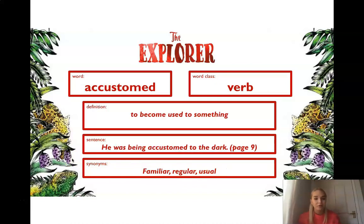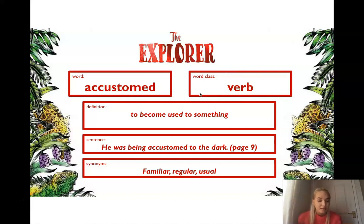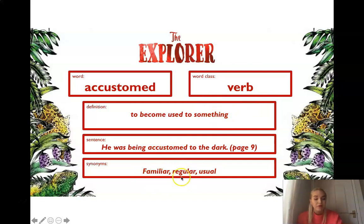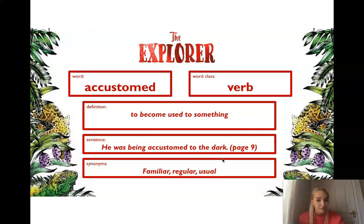Our final word that you're going to be hearing today is accustomed. Accustomed is a verb and it means to become used to something. The sentence that we're going to be hearing this word in today is: he was becoming accustomed to the dark, which means the same as being familiar, regular or something as usual. So this person has got used to the dark. He has become accustomed to the dark.